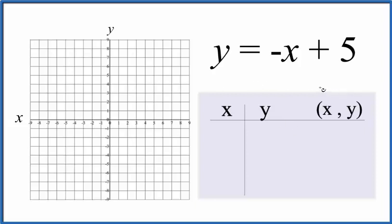Table of values - how about start with zero? Because negative zero, that's just zero, zero plus five is five. How about one? Negative one plus five, that's four. And then two - negative two plus five, that's three.